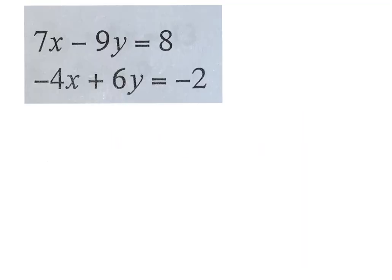For this one, I can't just multiply one group. For the last one, I just had to worry about one of the groups because I actually had a multiple of it already there — my 9 was a multiple of 3, so all I had to do was multiply the group with the 3. Here, we don't have multiples of each other. We have a 7 and a 4, and a 9 and a 6.